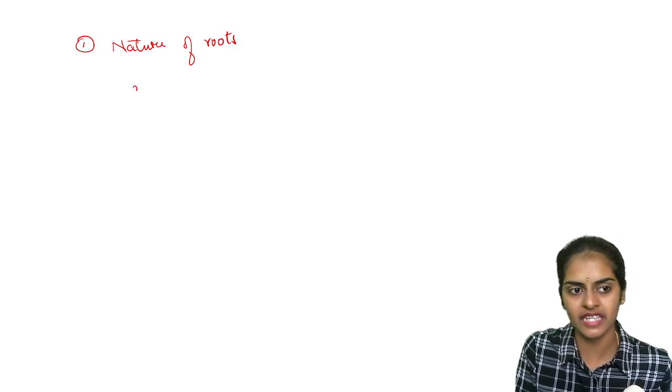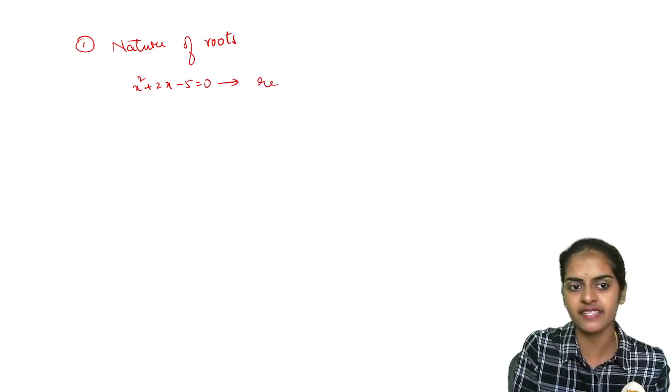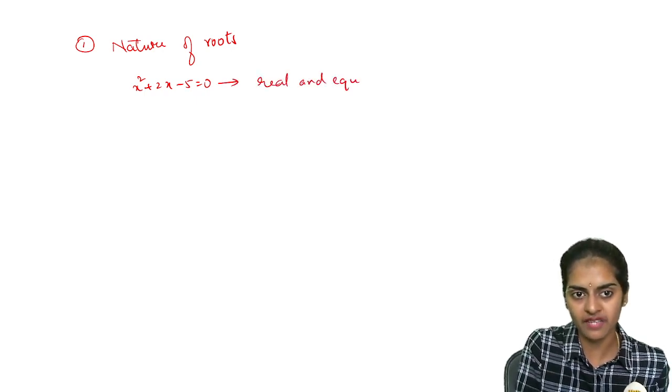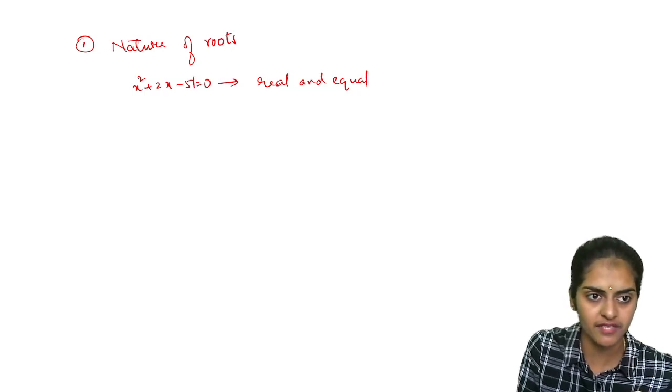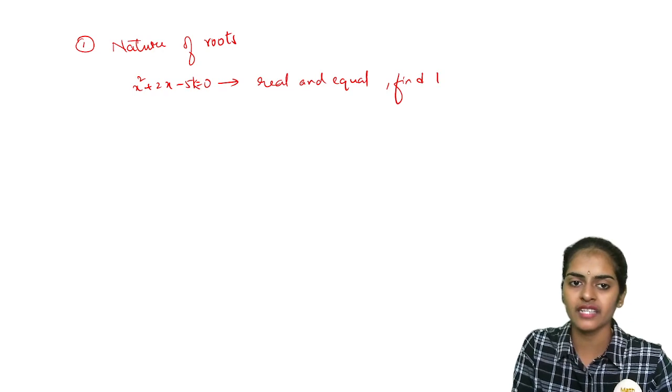For example, they may give you a quadratic equation x square plus 4x minus 5k equals to 0 and they will say this equation has real and equal roots. So they will ask you to find the value of k.